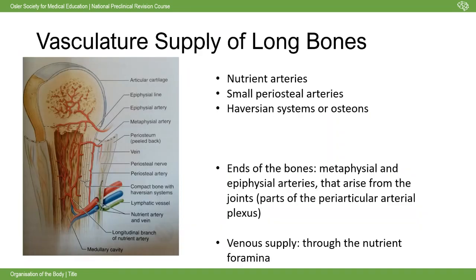There are three types of arteries that supply bone. First, nutrient arteries are branches of adjacent arteries outside the periosteum that pass obliquely through the compact bone via a shaft called the nutrient foramen. Second, small periosteal arteries also supply the bone - demonstrated by the fact that when you remove the periosteum, the bone can no longer survive. Third, blood reaches individual osteocytes in compact bone via the osteons or Haversian systems - small canal networks with blood vessels running through them.